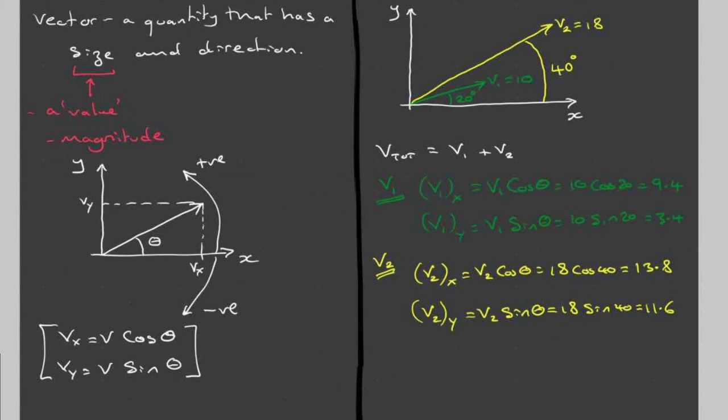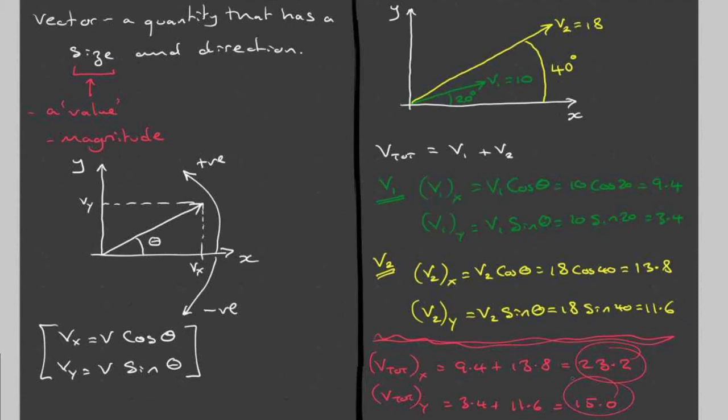Now, the total of these two is given by total x component will be the x component for v1 and the x component for v2 added together. So that will be 9.4 plus 13.8, and that is 23.2. And the total vector in the y direction is going to be the y component of the one plus the y component of the other, which is 3.4 plus 11.6, which is 15.0. So these are the two components.